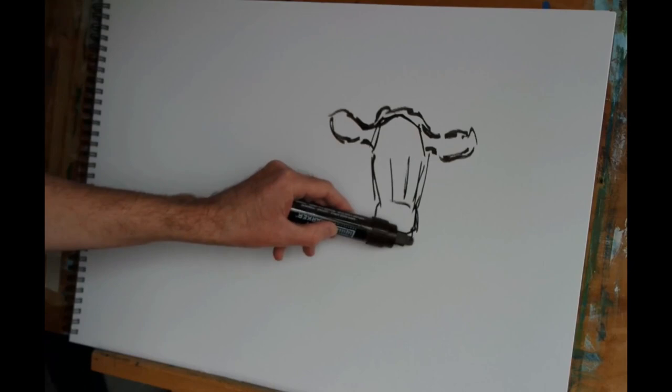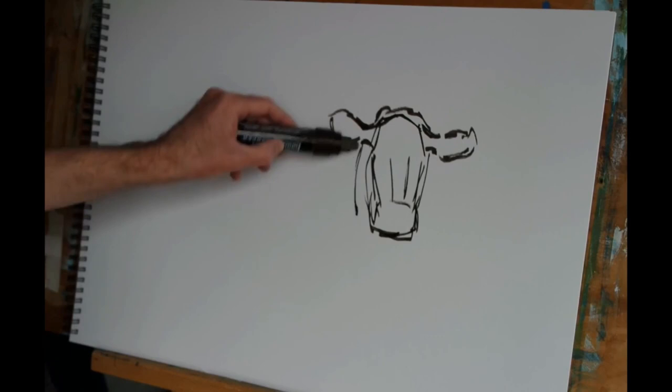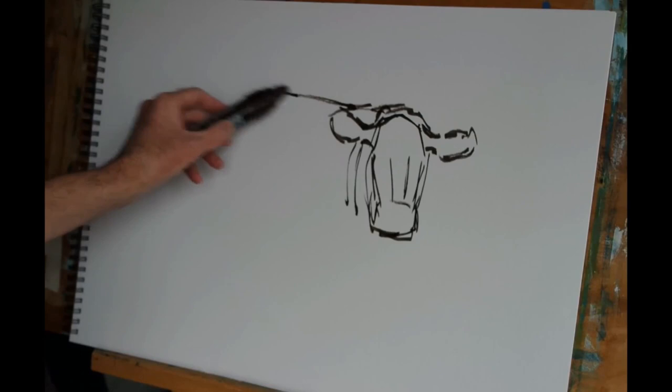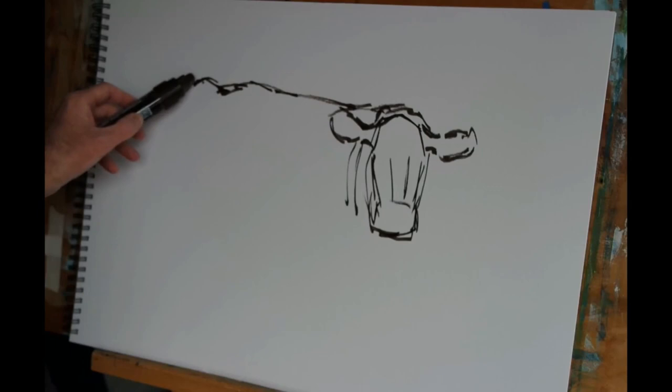So there's the head of our cow, and then there are a few creases in the neck here. This is the line at the back, there's a little bit of a bump there, and then the hip.